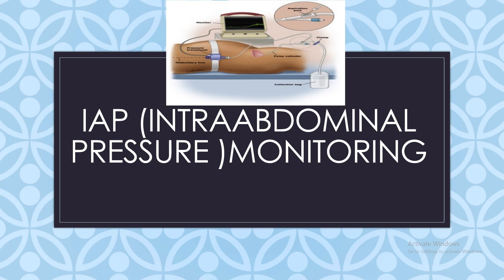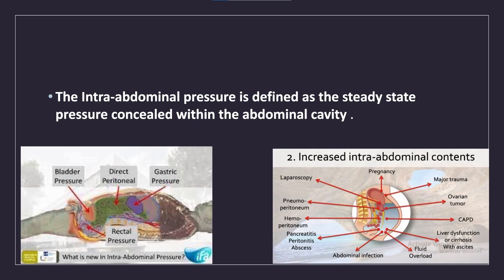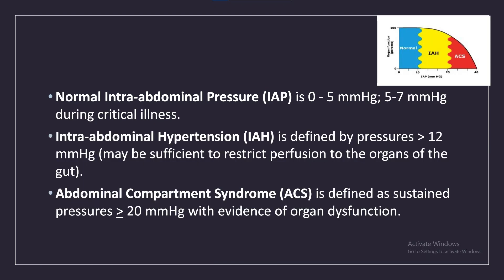IAP — intra-abdominal pressure — monitoring. The intra-abdominal pressure is defined as the steady state pressure concealed within the abdominal cavity. Normal intra-abdominal pressure is 0 to 5 mmHg, and 5 to 7 mmHg during critical illness.